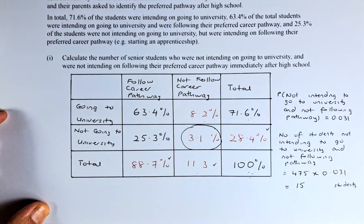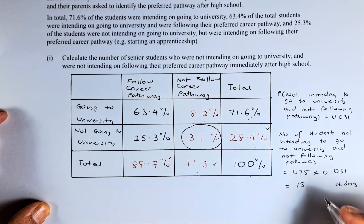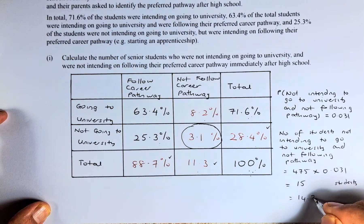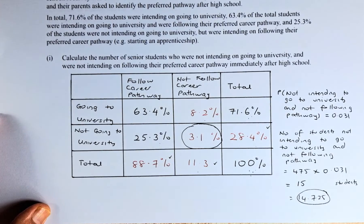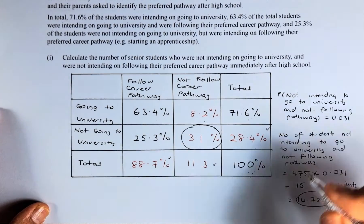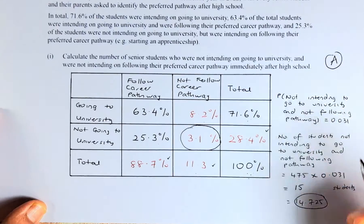The calculator gives 14.725, but since you cannot have 14.725 students, you round up to 15 students.